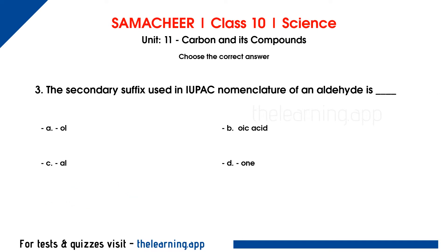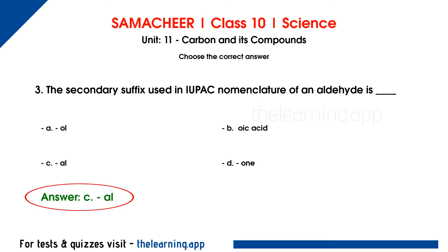Third question. The secondary suffix used in IUPAC nomenclature of an aldehyde is dash. Options are A. OL, B. OIC acid, C. AL, D. ONE. Correct answer is option C, AL. If we represent an aldehyde compound in IUPAC nomenclature, we call it AL.